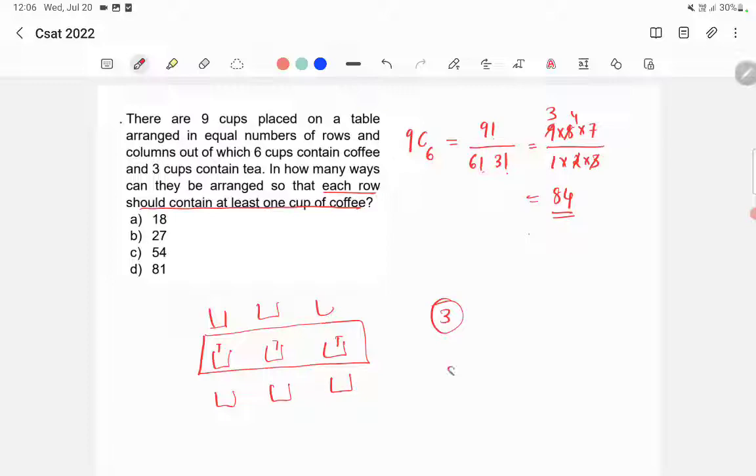So you have to minus 3 from 84. So you will get 81. So there are total 81 possibilities in which each row will contain at least one cup of coffee. So the answer is option D.